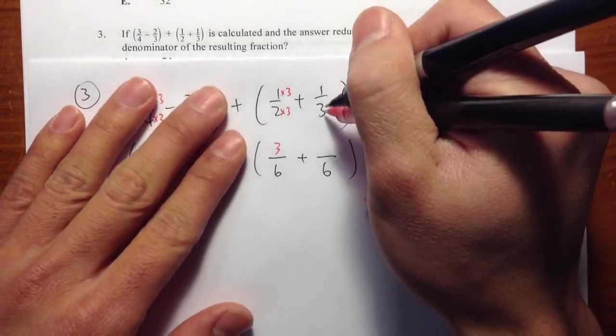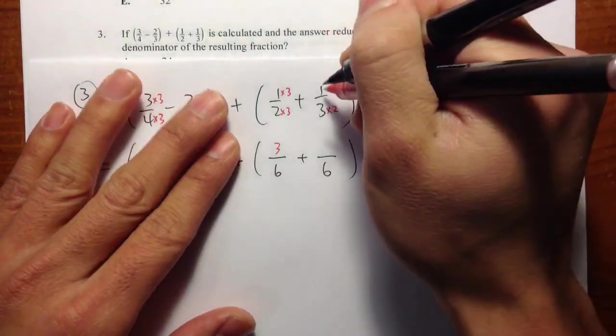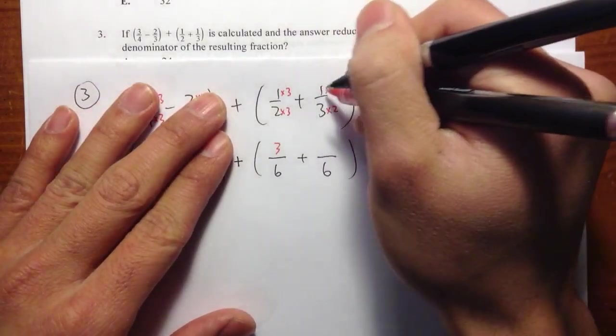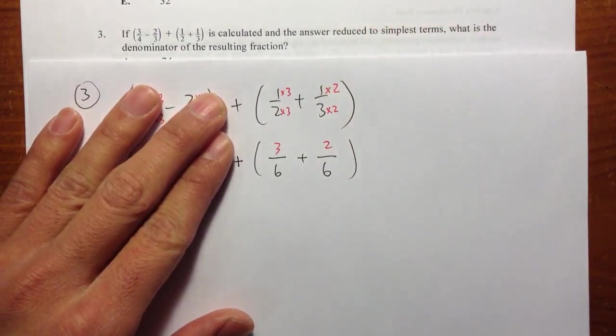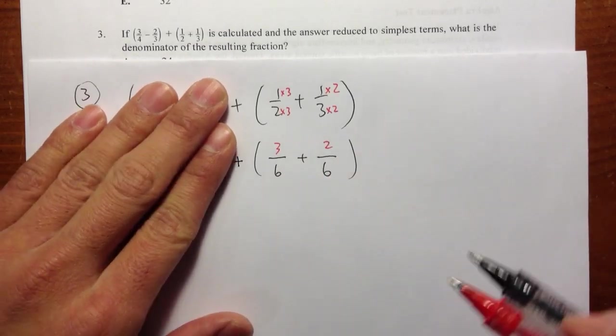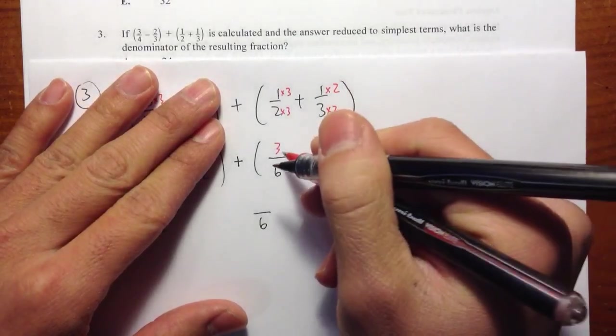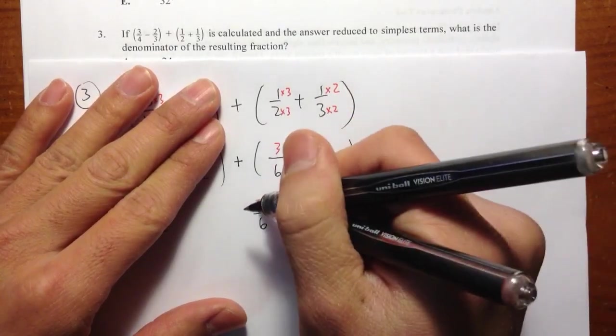And for this one, 3 times 2 is equal to 6. I will multiply by 2 on the top as well. And 1 times 2 is equal to 2. Now we have the same denominator. To add, the denominator doesn't change. And then we are just going to do 3 plus 2, which is 5.